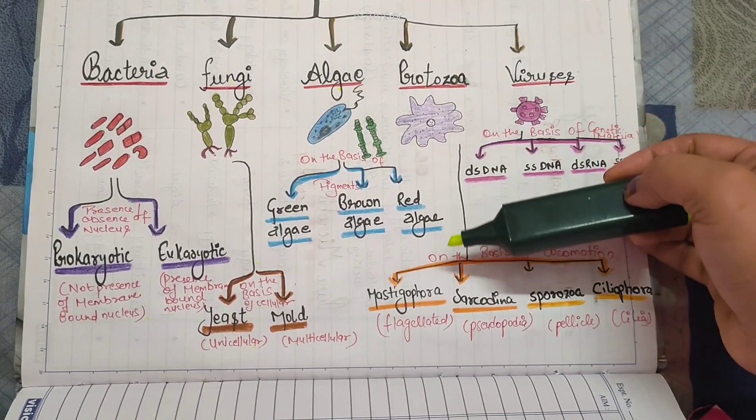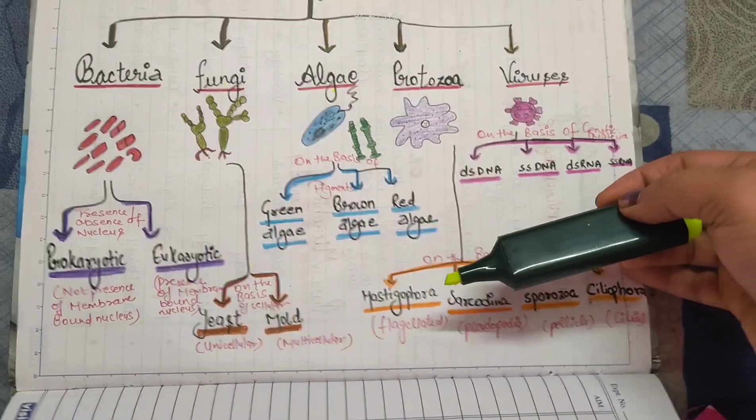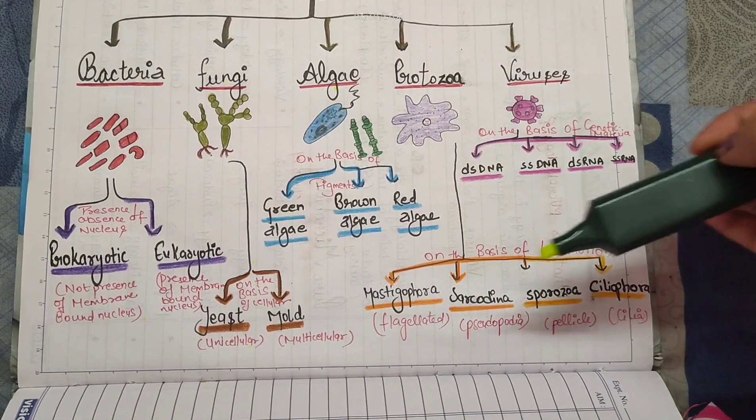Protozoa are further classified on the basis of locomotion: mastigophora, sarcodina, sporozoa, and ciliophora.